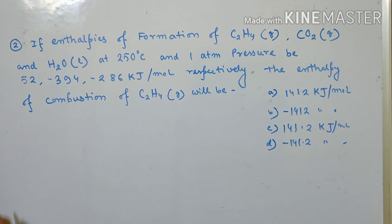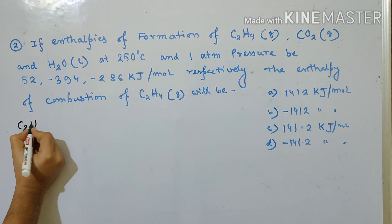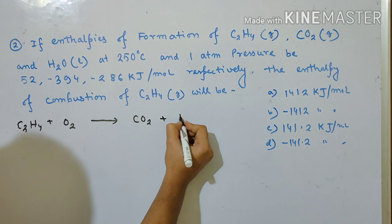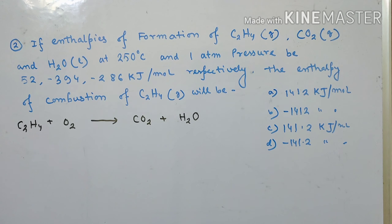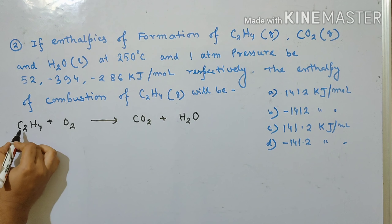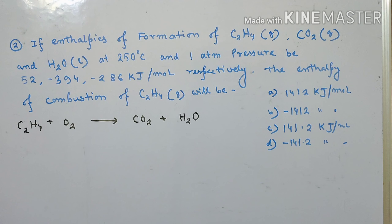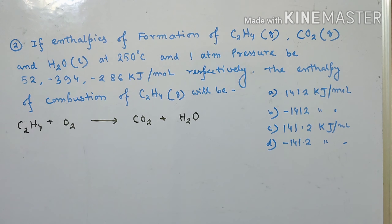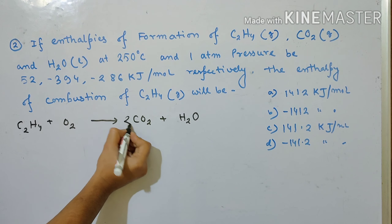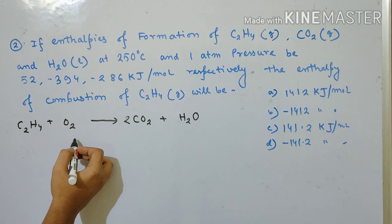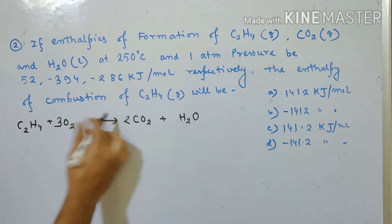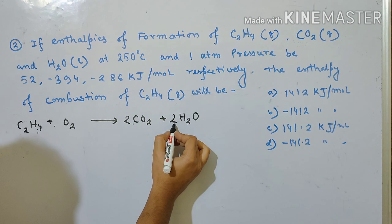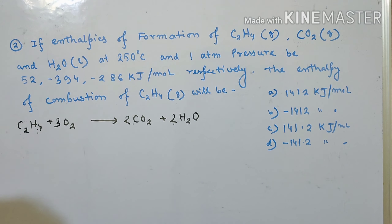The combustion reaction of C2H4 means C2H4 reacts with oxygen and gives rise to carbon dioxide and water. We need to balance it. C2H4 has 2 carbons, so we need 2 CO2. It has 4 hydrogens, so we need 2 H2O. For oxygen: 2 CO2 gives 4 oxygen atoms, and 2 H2O gives 2 oxygen atoms — total 6, so we need 3 O2 on the left. This gives the balanced equation: C2H4 + 3O2 → 2CO2 + 2H2O.